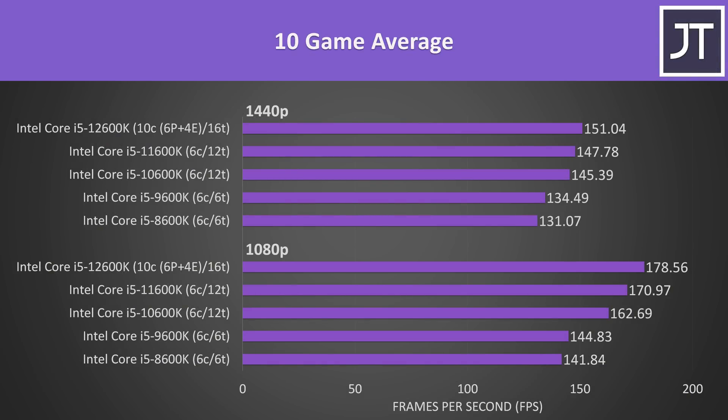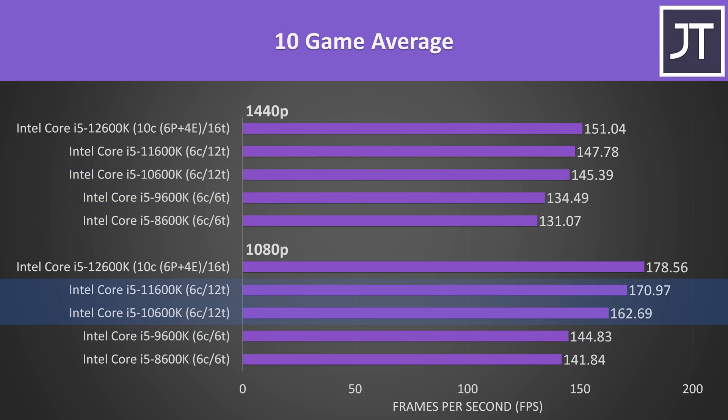Looking at average frame rates for all 5 processors at both 1080p and 1440p, there are always more frames with the newer processor, but the difference varies. The gap between 8th and 9th gen was much smaller than the others, while going up to 10th gen from 9th offered the biggest performance improvement. At 1080p, 11th gen gave about 8 FPS extra, then 12th gen was another 8 FPS improvement on top of that. There's less of a difference at 1440p as processors matter less when more GPU bound.